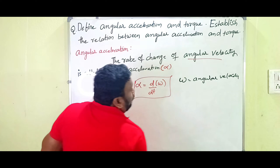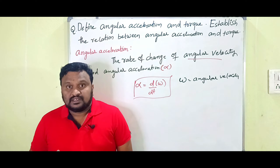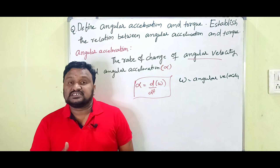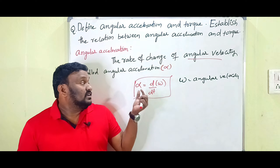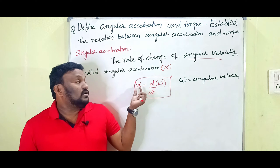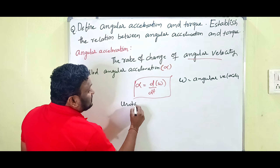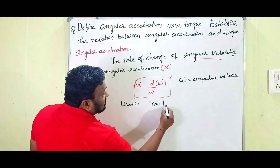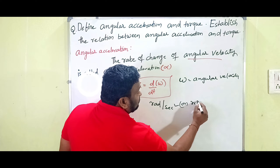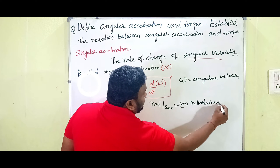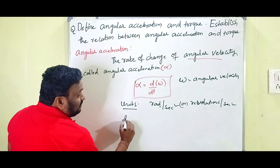When a body is moving along a circular path with respect to one axis, its velocity is taken as angular velocity and its acceleration is taken as angular acceleration. That is why we say the rate of change of angular velocity is called angular acceleration. The units of angular acceleration are radian per second squared (rad/s²) or revolutions per second squared.